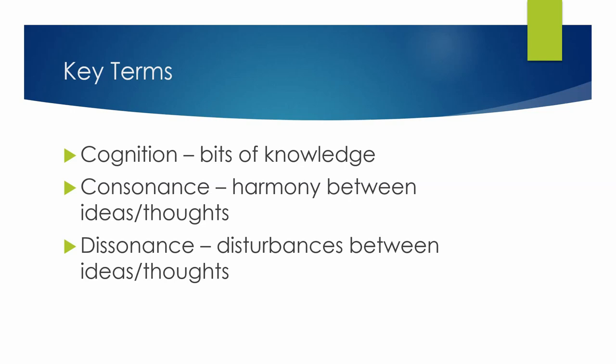Let's dive into cognitive dissonance theory. Before we even talk about it — and this is something the Khan Academy video left out, so I thought it was important to address — we need to talk about some key terms. First, we have cognition, which is just bits of knowledge. These are the things that we think about and act on — little pieces of information and knowledge that float around in our brain. We'll sometimes activate those bits of knowledge and other times we won't.